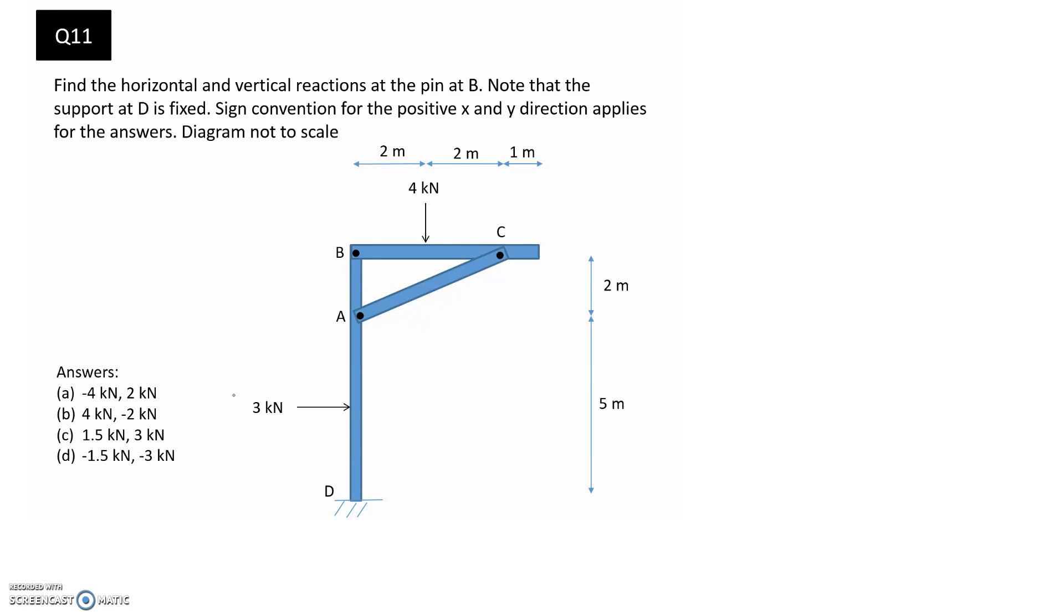The first thing I'm going to do is draw the free body diagram of the overall structure. The external forces are this 3 kilonewtons and the 4 kilonewtons. At the base, it's a fixed support, so it's going to have a horizontal, vertical, and moment reaction. We'll call it Dy, Dx, and Md for those.